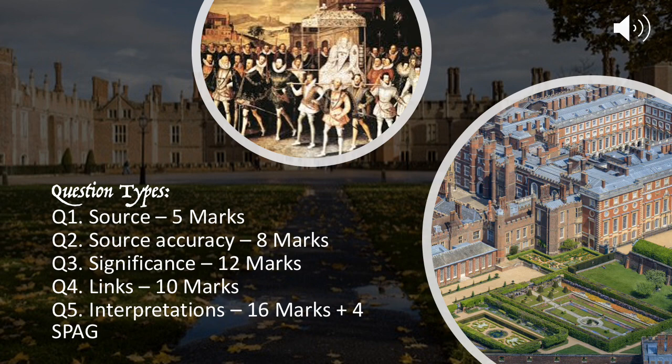Question four is really, really difficult. It's a ten mark question where you have to make links between different areas of history. We will have a go at that in the future, once we're a little bit more specialised in Elizabeth. And then finally we have our interpretations question, which has the exact same structure and style as the one you've already tried for Germany.